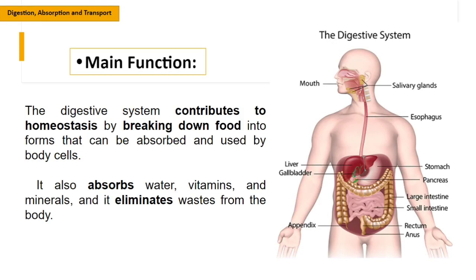Just a brief overview: what is the main function of our digestive system? Number one is to contribute to homeostasis — the balance of the body — by breaking down the food we ingest into forms that can be absorbed and used by our body cells. Second is to absorb water, vitamins, and minerals from the food we eat, and to eliminate waste from our body.